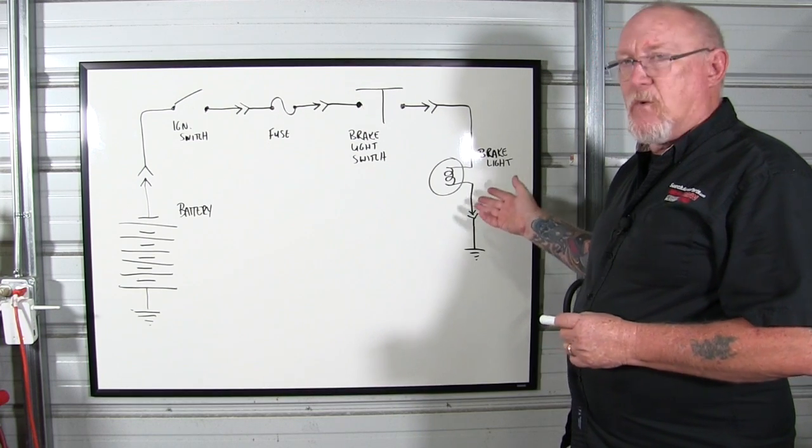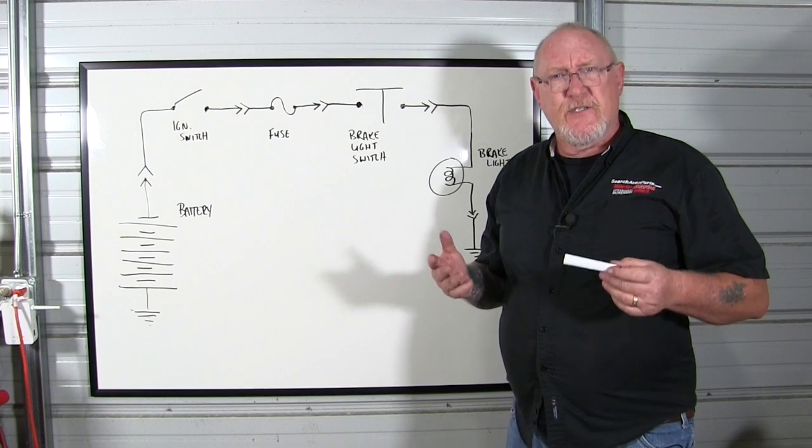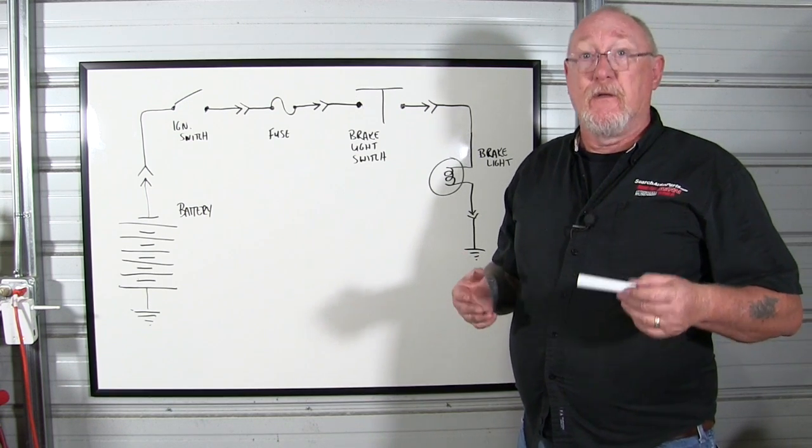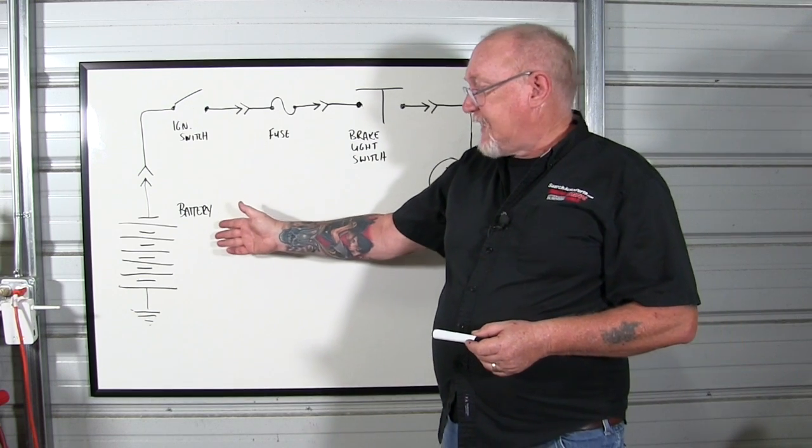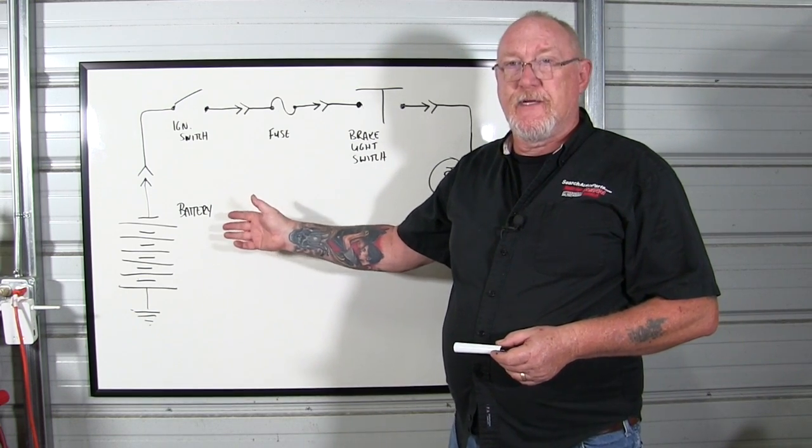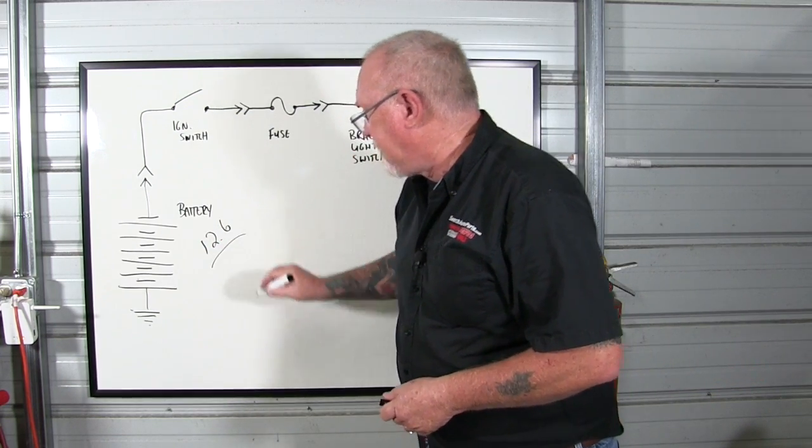Now, in order to get the load to work, I have to get current flowing. And before I can do that, I have to have a source of electromotive potential that we measure in terms of voltage. Well, that's what our battery represents. That's our source for this circuit. Let's just say it's a nice, healthy battery. It has 12.6 volts in it.